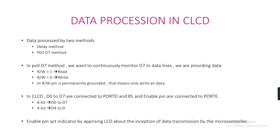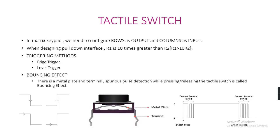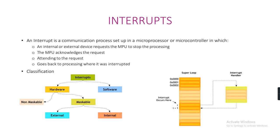For the tactile switch in a matrix keypad, we need to configure rows as outputs and columns as inputs. When designing a pull-down interface, R1 is 10 times greater than R2. The triggering methods are edge trigger and level trigger. The bouncing effect occurs due to a metal plate and terminal causing spurious pulse detection while pressing or releasing the tactile switch.